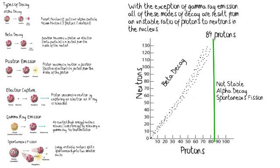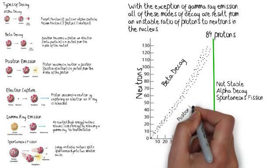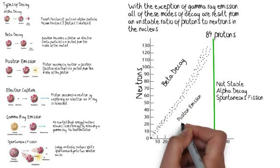If you have more neutrons than protons, than the stable isotopes say you should have, you're going to undergo beta decay. So, if you're in this area of the graph up here, you're going to undergo beta decay so that a neutron can become a proton and you can work your way back to the belt of stability.